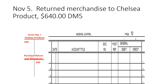Purchase returns and allowances is a credit because it's a contra purchases account. A purchases account is a cost account, and this is a contra account — designed to lower the book value of the purchases account. Think of it this way: if you have an A in a class and you just took a test and got a C, your grade in the grade book might be an A, but your book value will be much lower. That's the same concept — purchase returns and allowances lowers the book value of the cost account of purchases.